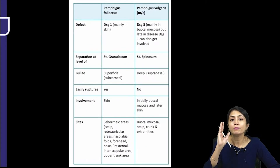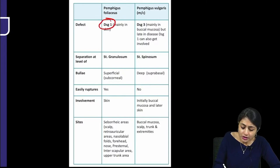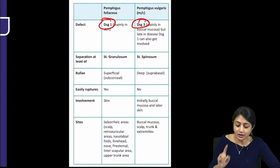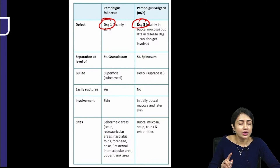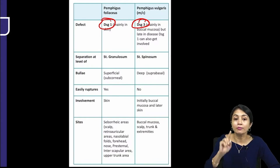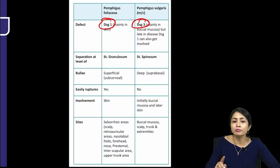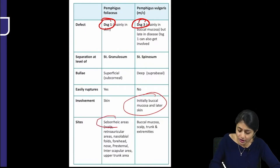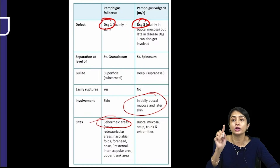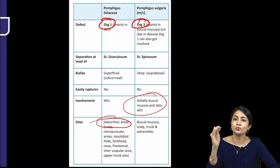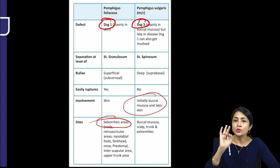To summarize the differences between pemphigus vulgaris and foliaceous: desmoglein 1 in foliaceous and desmoglein 3 in pemphigus vulgaris. Bulla is flaccid in both but in foliaceous it ruptures soon, so you do not usually see a bulla. Mucosal involvement is only in pemphigus vulgaris, not in foliaceous. Seborrheic areas are more commonly involved in foliaceous. F for foliaceous, F for first — desmoglein 1 is first/superficial, so it is a sub-corneal split.